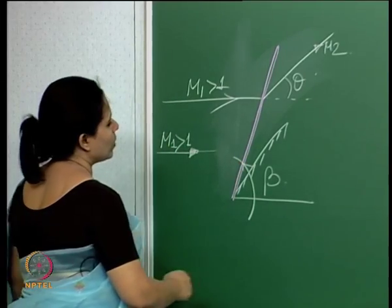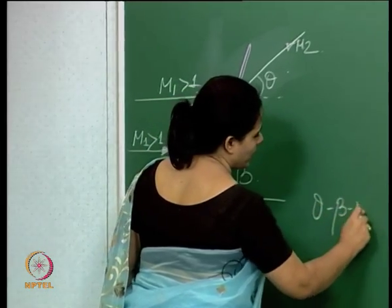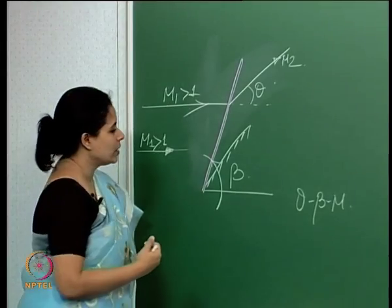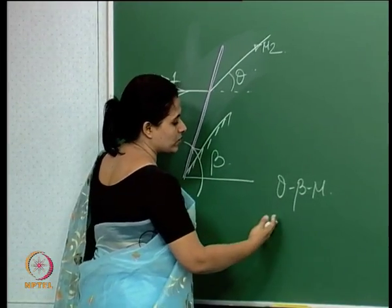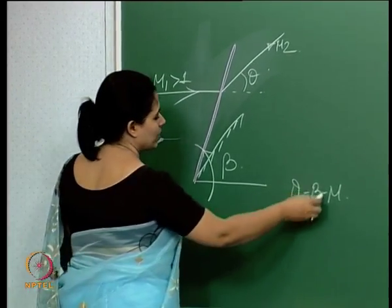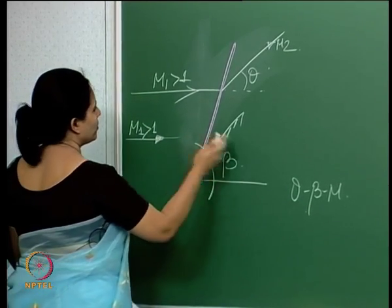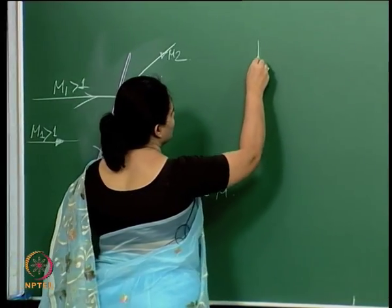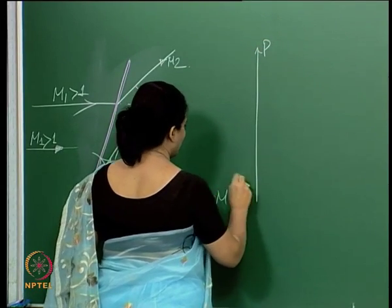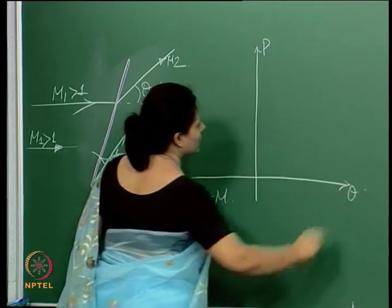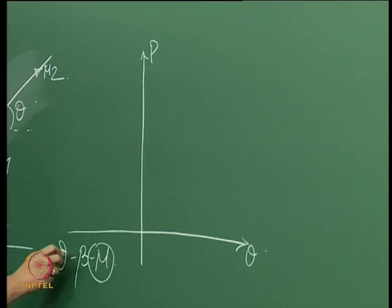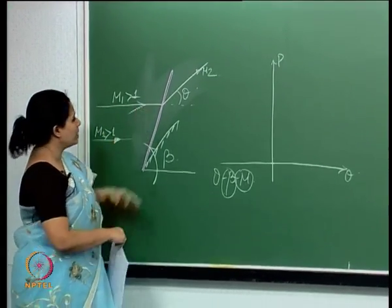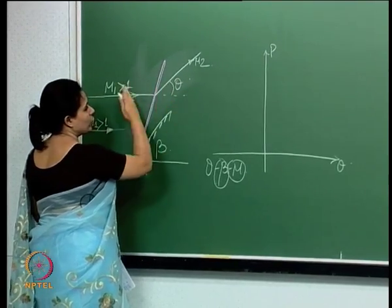We've talked about the theta-beta-M relationship. This is a standard diagram available in textbooks, plotted for various combinations of theta, beta, and M. For a given shock wave angle and a given Mach number, as we change theta it goes through a range of values.